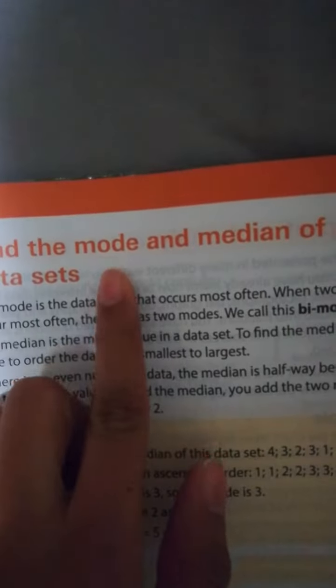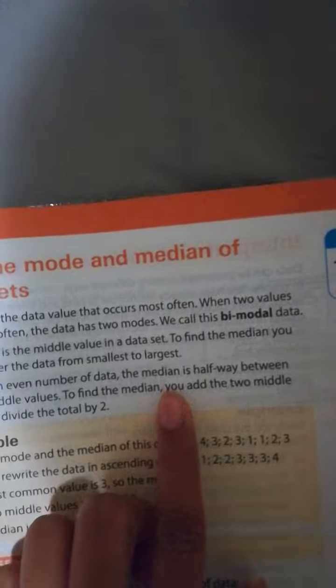Remember that the mode is the number that appears most. Please take this down. Bimodal is a data set with two modes. So it has two numbers that appear the same amount of times.